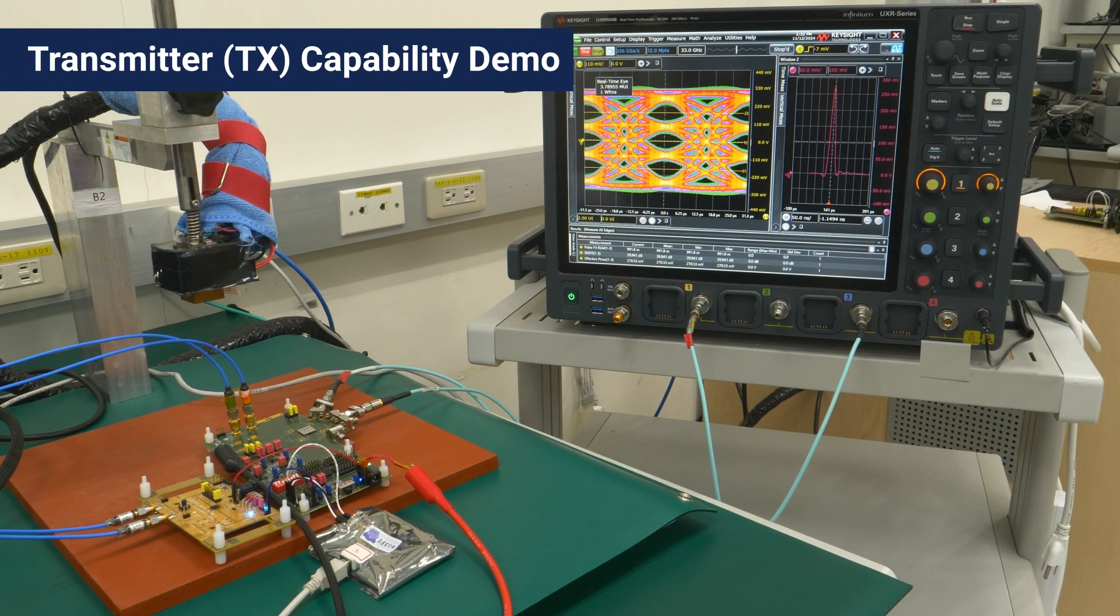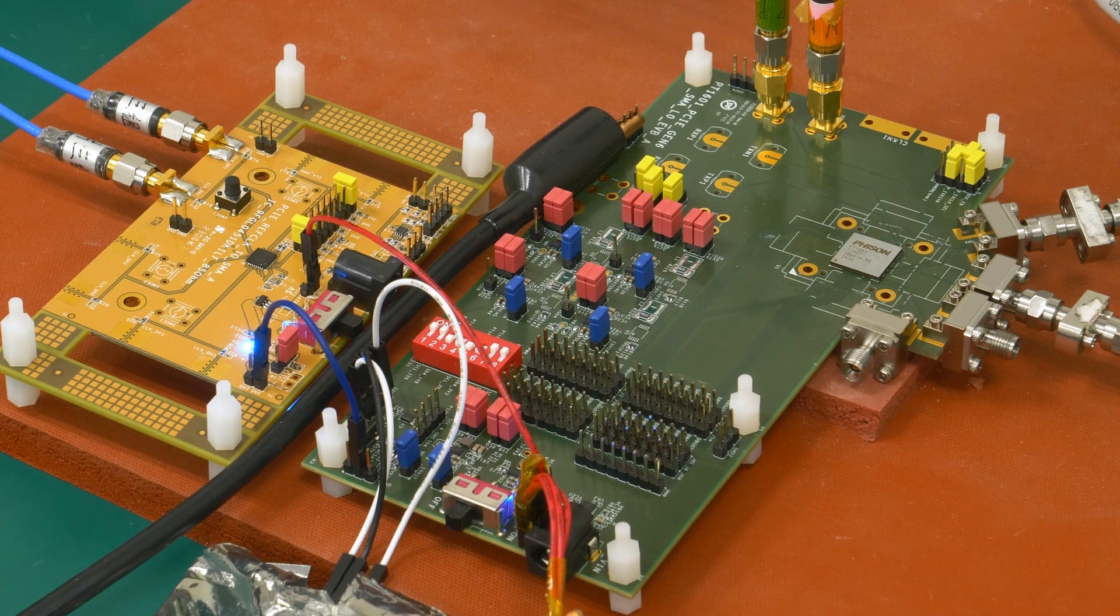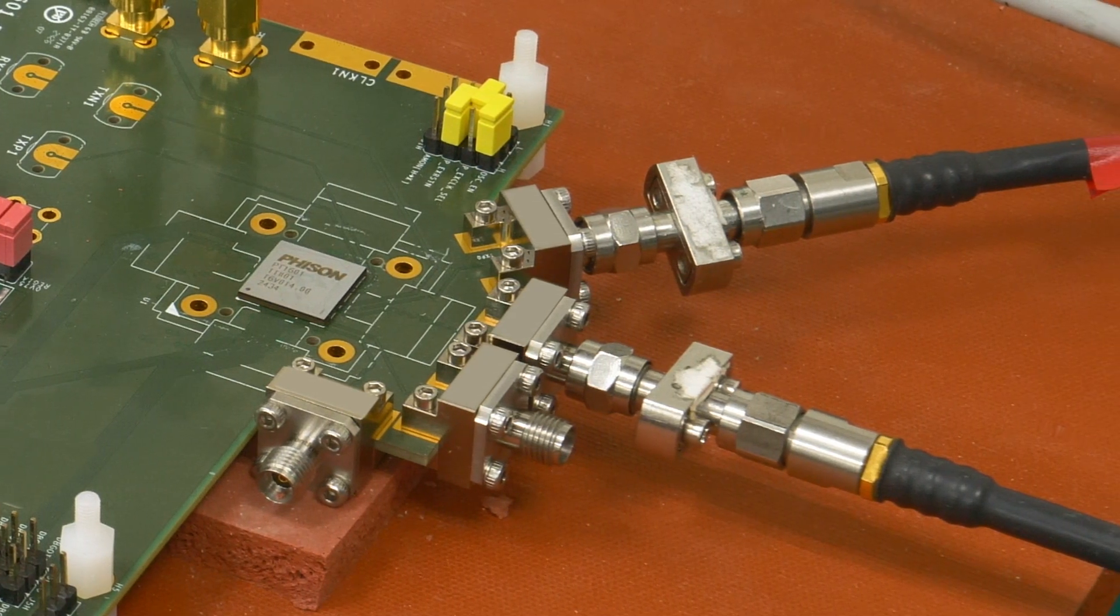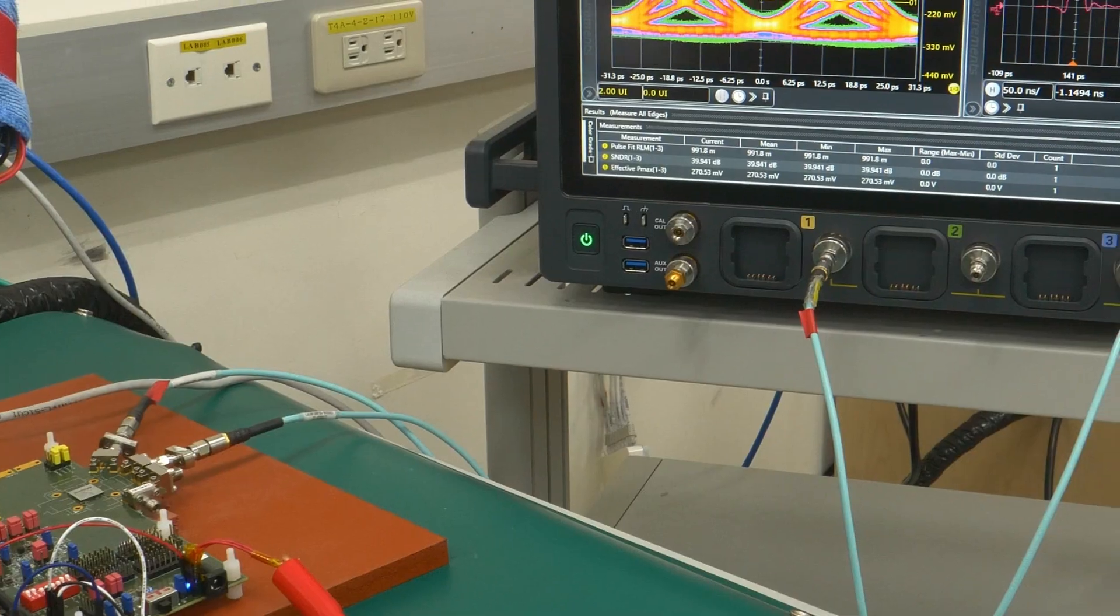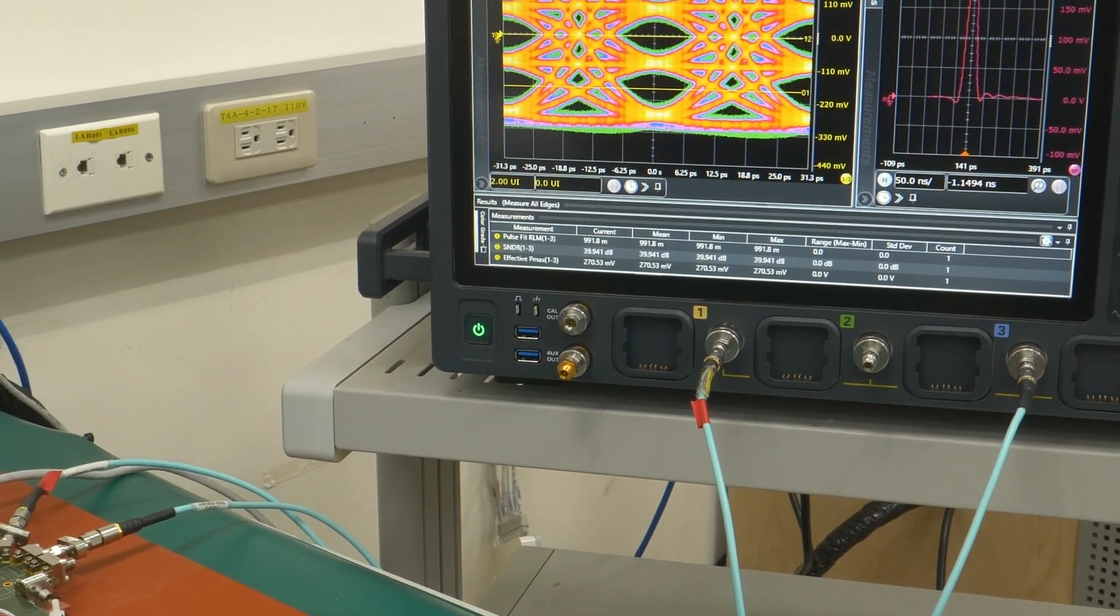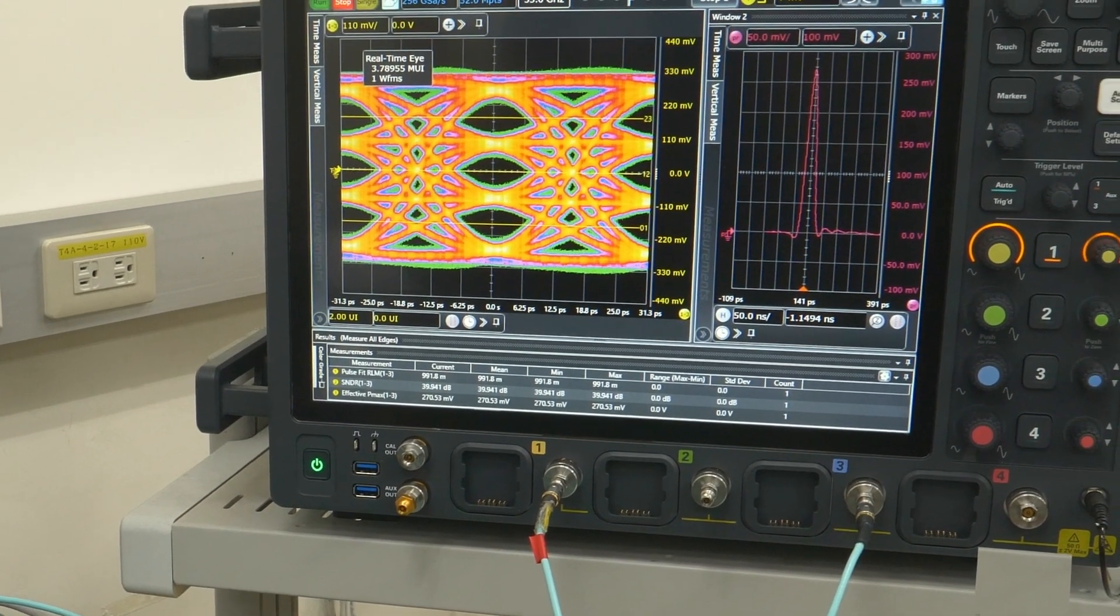Firstly, let's start with transmitter capabilities. Here is our PCIe 6 Re-Timer PHY test chip, which is transmitting data at 64 gigabits per second from the TX side of the chip, through the PCB and the connector, and finally to the scope via the cable.